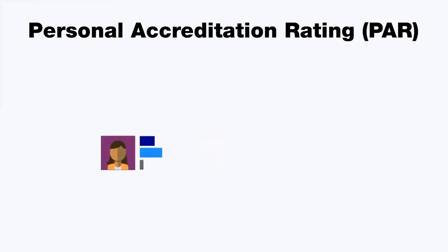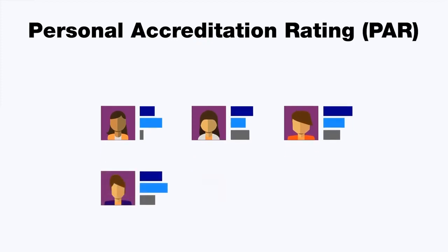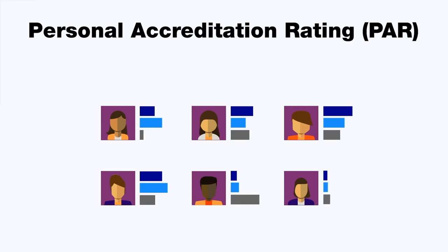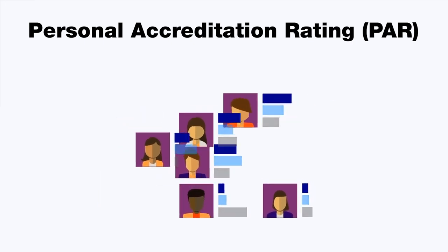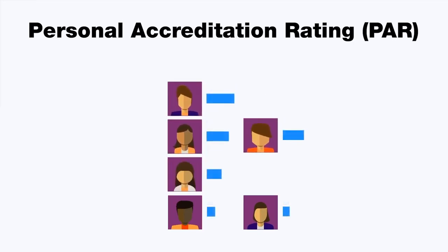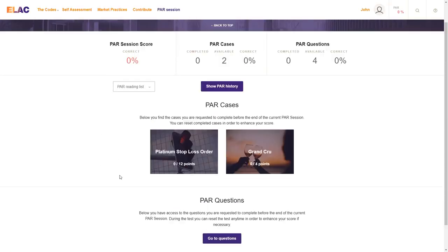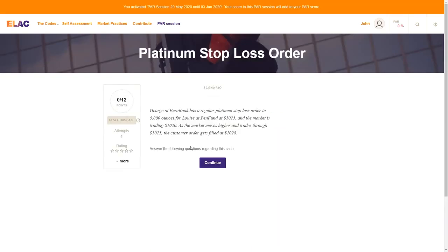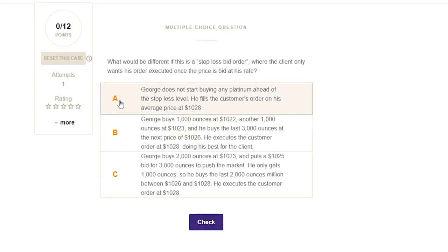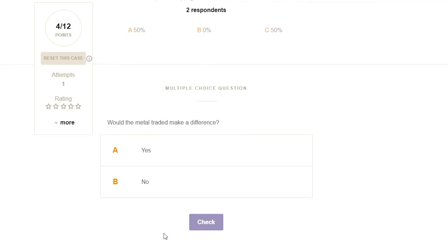The Personal Accreditation Rating, PAR, is a measurement tool of an individual's knowledge about the good market practices advocated by the codes. As a benchmark, PAR shows you and your senior management how you have scored on your code's knowledge, whilst allowing you to measure that score against your peers. With PAR, users are tested both to the entity's and the industry's expectations of good market practices and ethical conduct, allowing them to understand and demonstrate that individual guidance while staying up-to-date with the content of the codes.